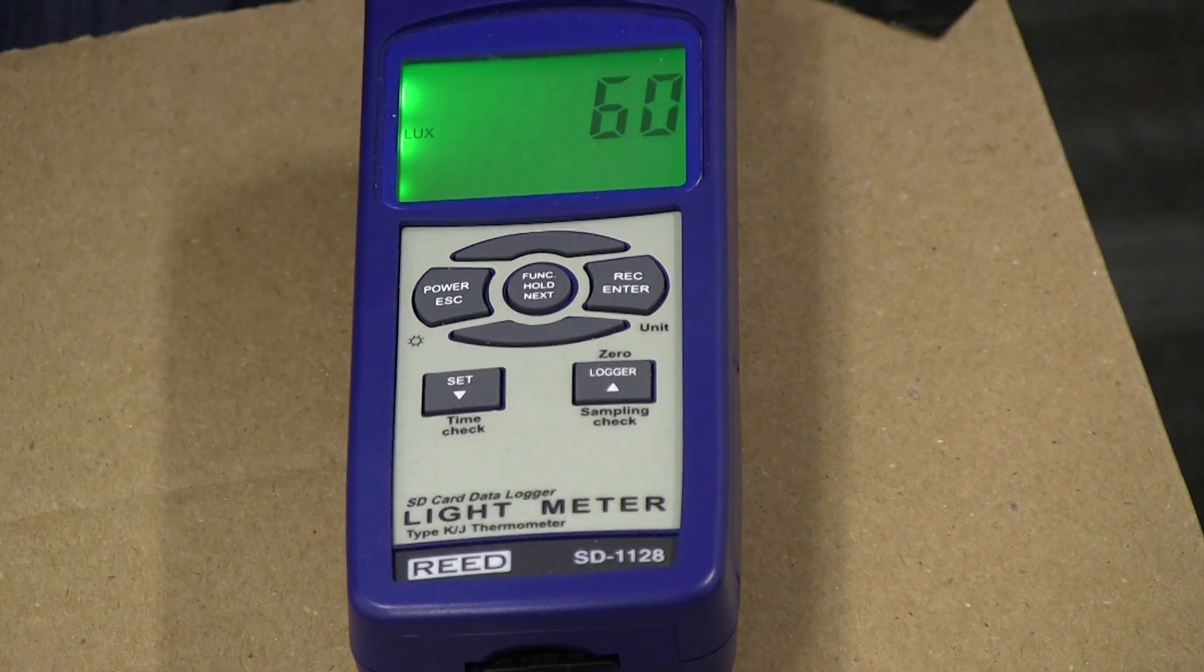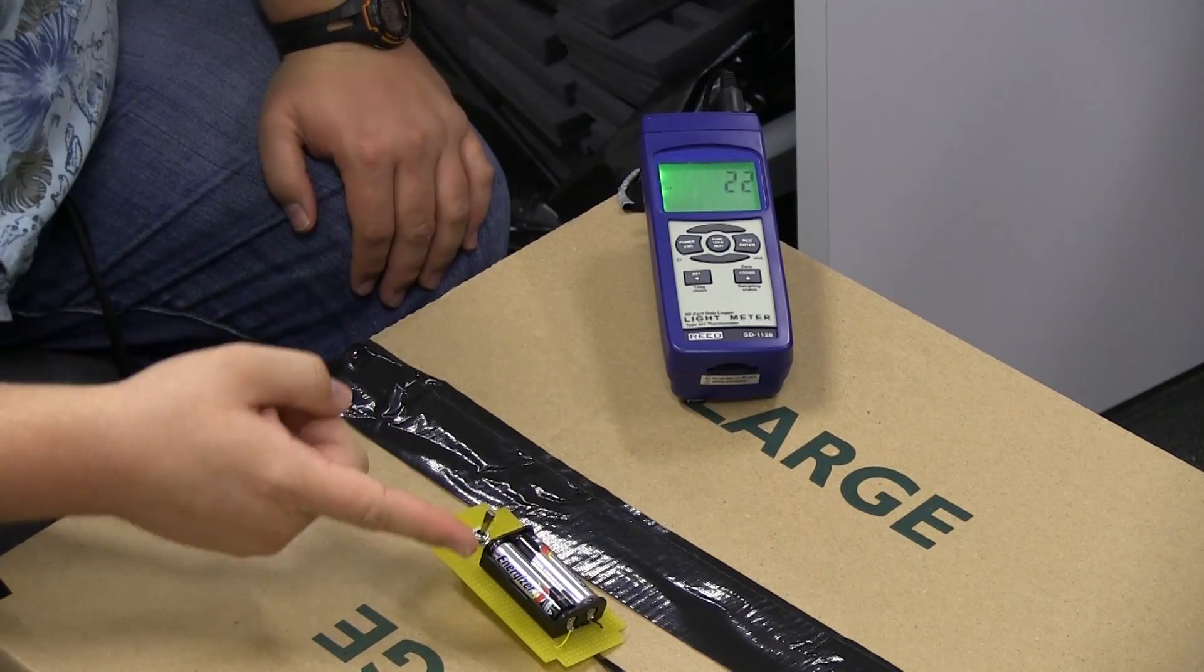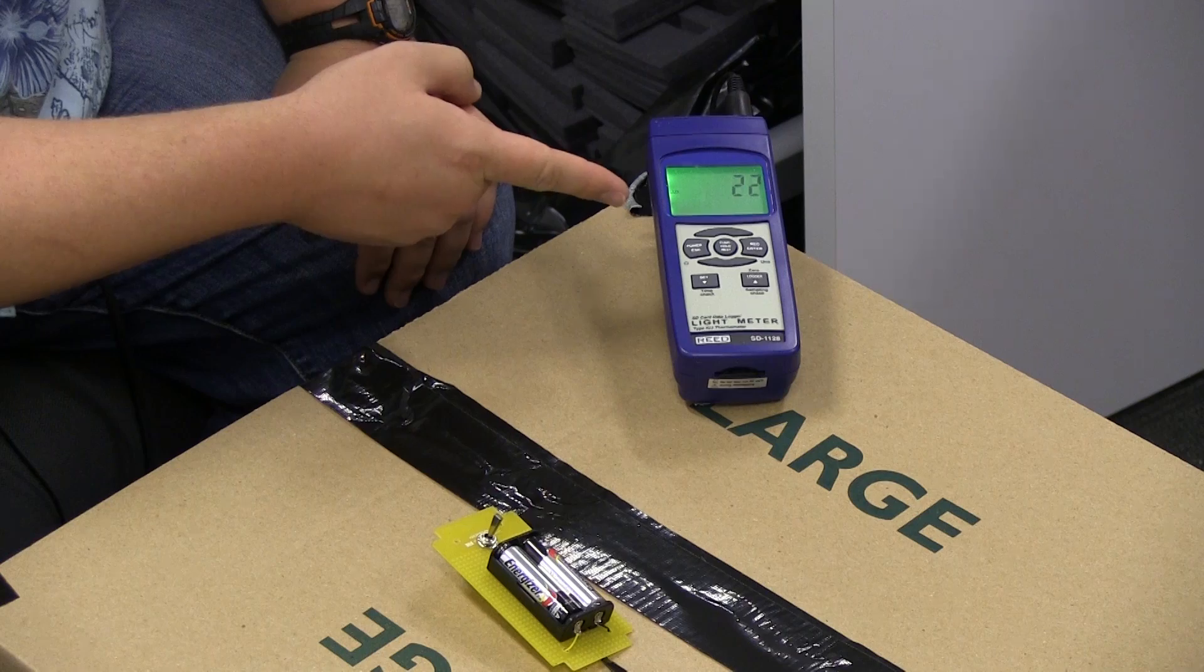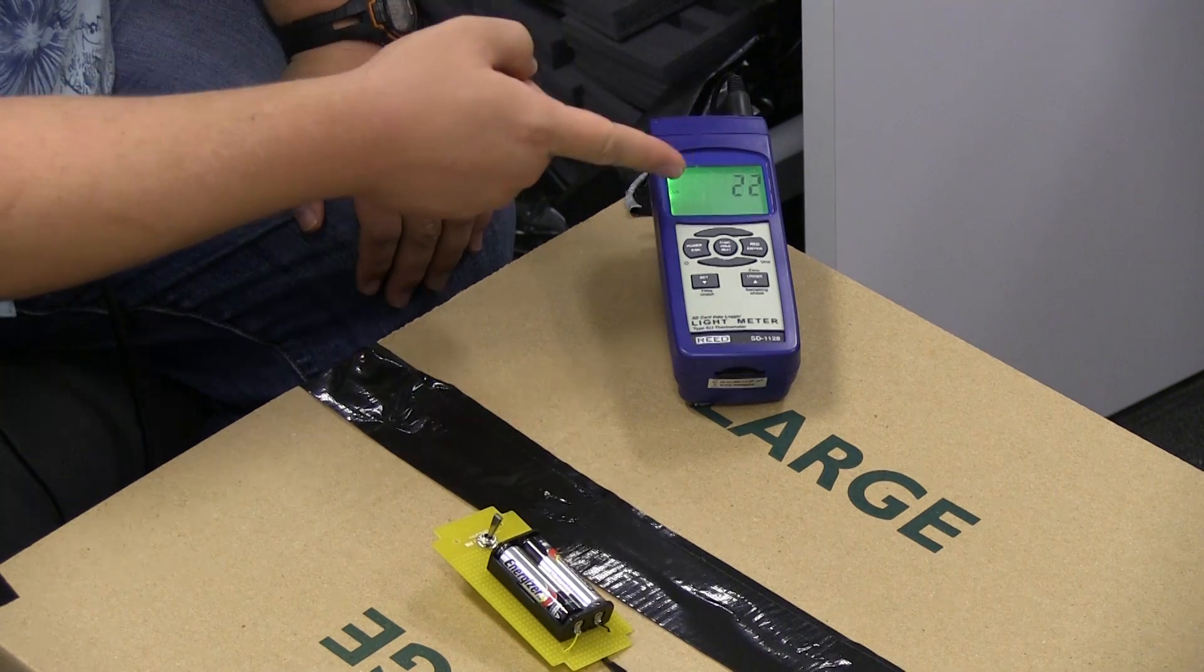We run the test for two hours and the light of the flashlight becomes dimmer and dimmer. After two hours the meter shows only 22 lux of brightness from the flashlight.